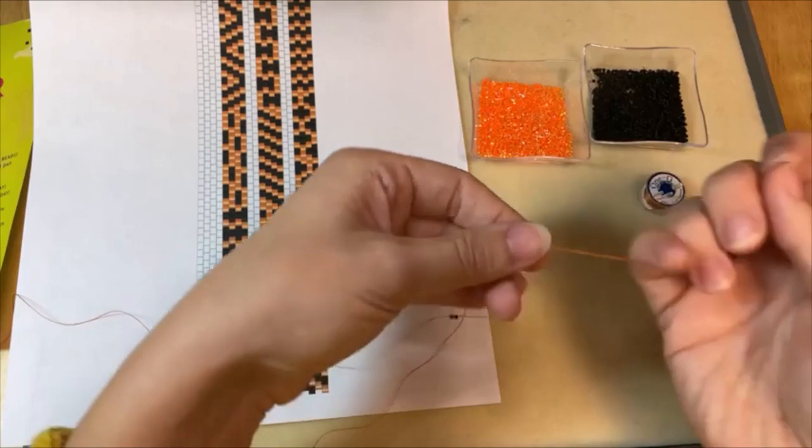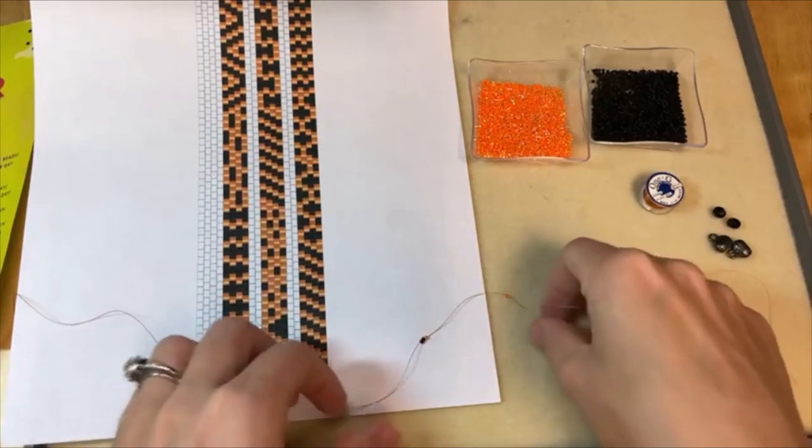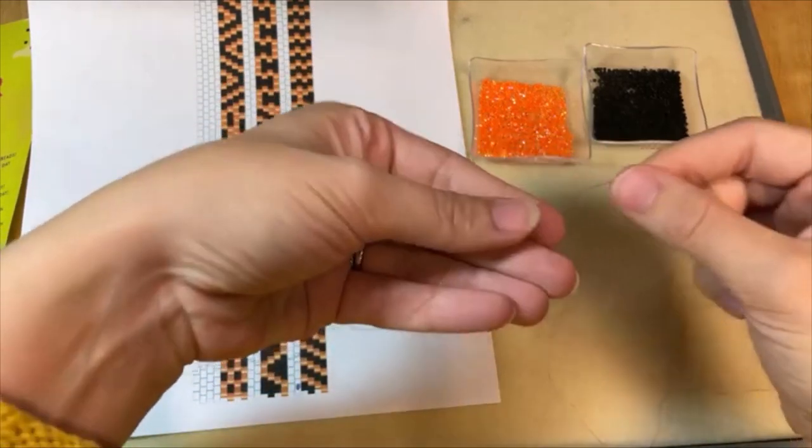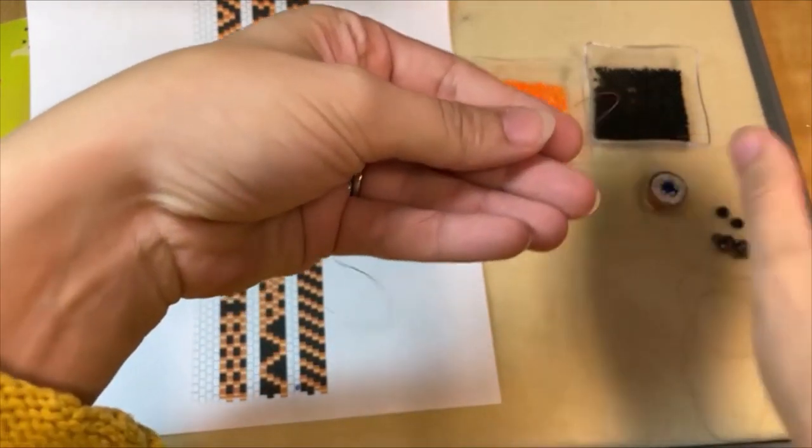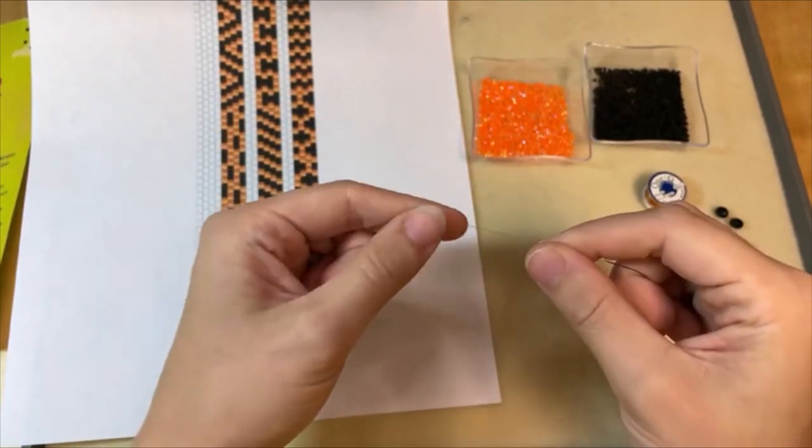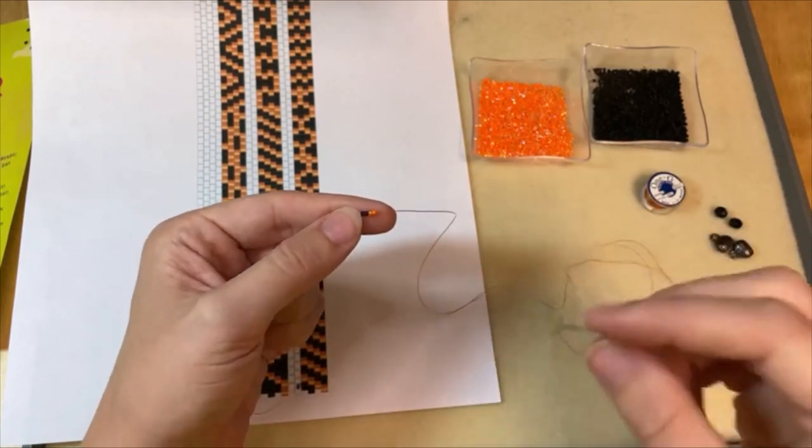I've got my two black and my two orange and then I'm going to slide it down my thread. We have really great instructions for how to do even count peyote stitch. We've got PDF diagrams, videos, and text tutorials on the website that I have linked in the video description.